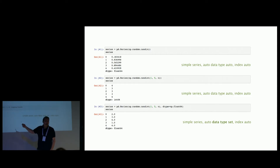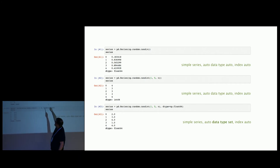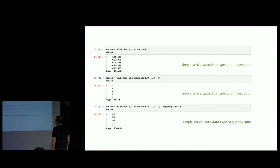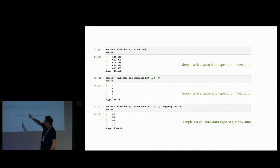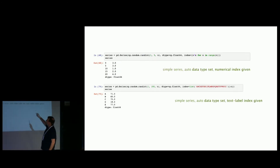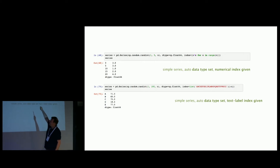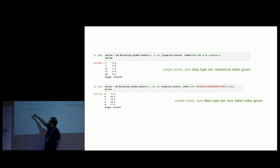Only text is still an object in Pandas series. We can also create a series explicitly setting the data type to float, or give it a custom index — for example, multiples of five. You can put any text labels there as an index; it doesn't really matter.